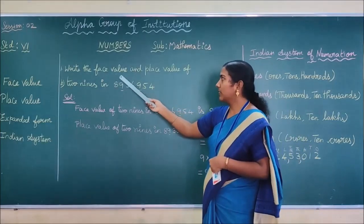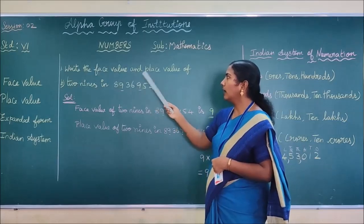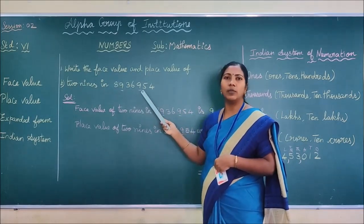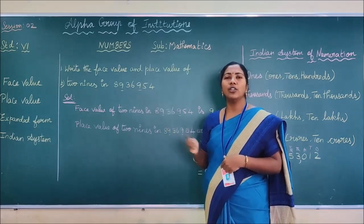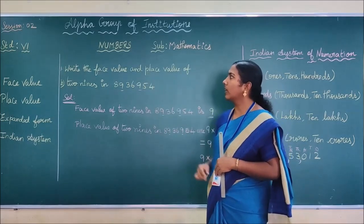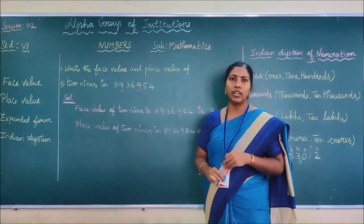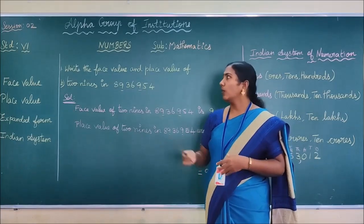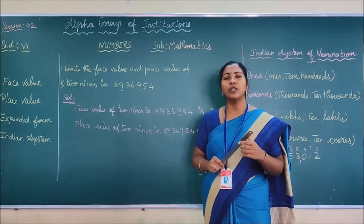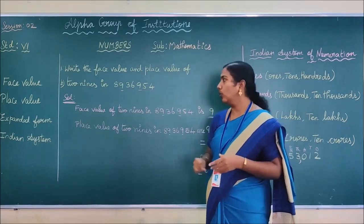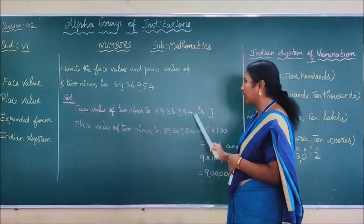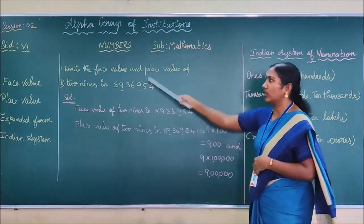I write the face value and place value of two nines in the given number. What is the question we are asking? Face value and place value of two nines. As per the concept, the face value is the digit itself. So, the face value of both nines in the given number is nine. This is the answer for the first one.